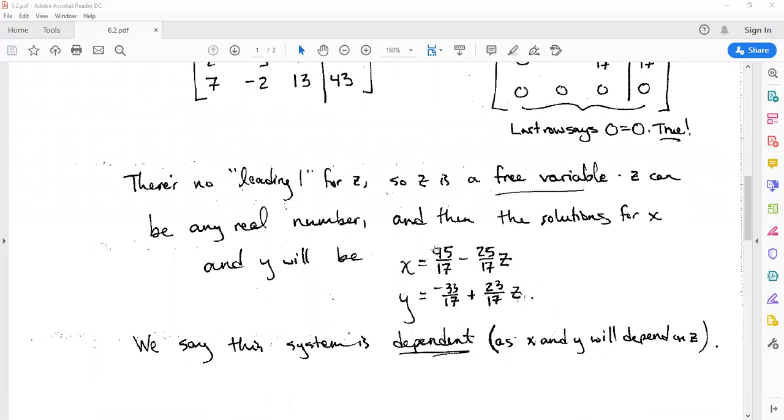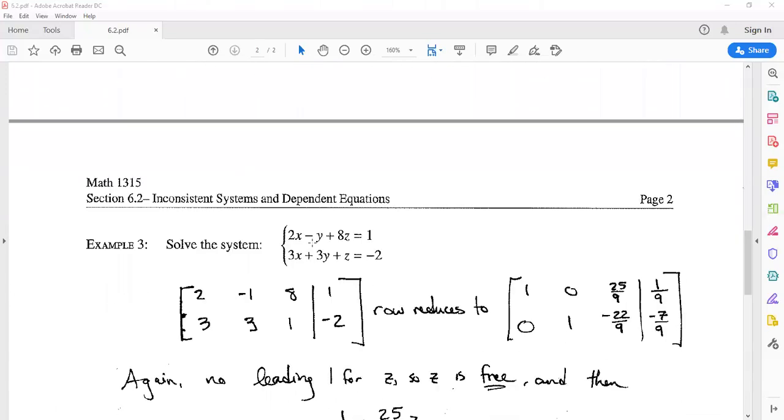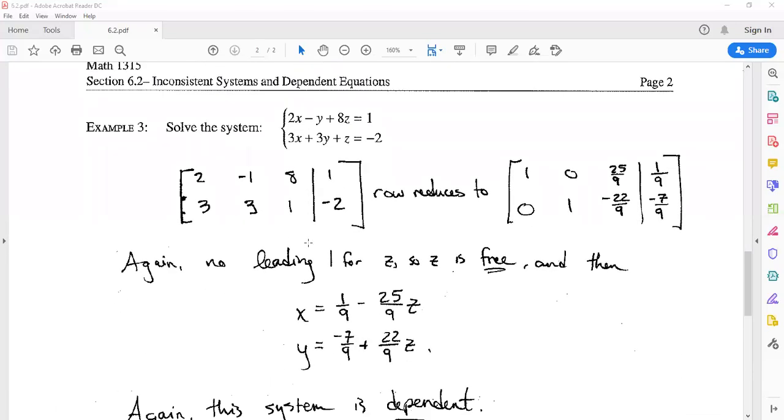So the solutions here will be this for x, this for y, and then z is free to be anything. We have an infinite number of solutions here, and what we say is that this system is dependent—the x and y coordinates of the solution will depend on which choice for z that we make. We are free to make any choice for z that we like.